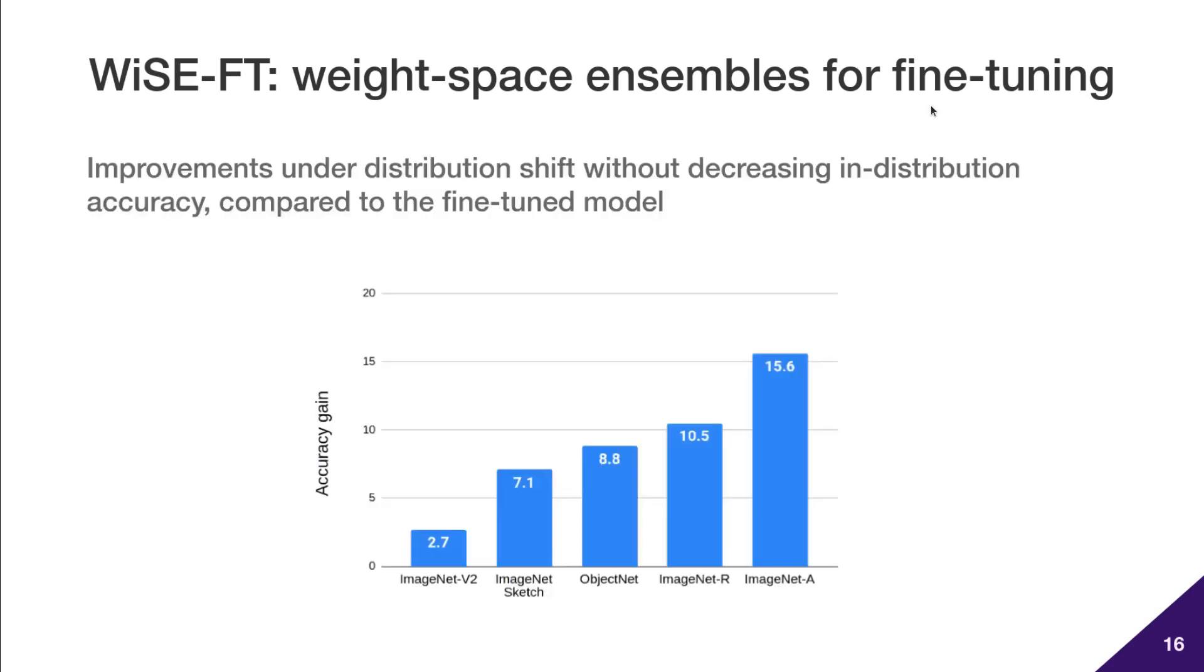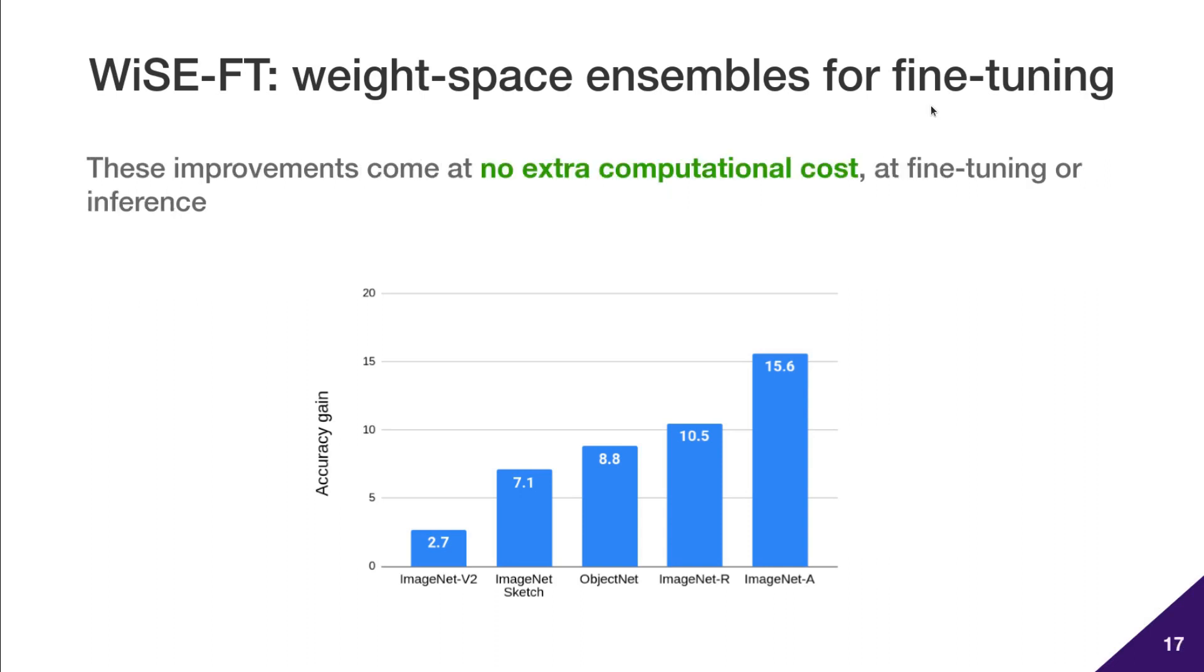Despite its simplicity, WiSE-FT is very effective. For a VITL14 model, WiSE-FT improves accuracy on the distribution shift by 3 to 16 percentage points without any drop in accuracy on the target task ImageNet. These improvements come at no extra computational cost, at training or at inference, since the models are merged into a single model with the same size.